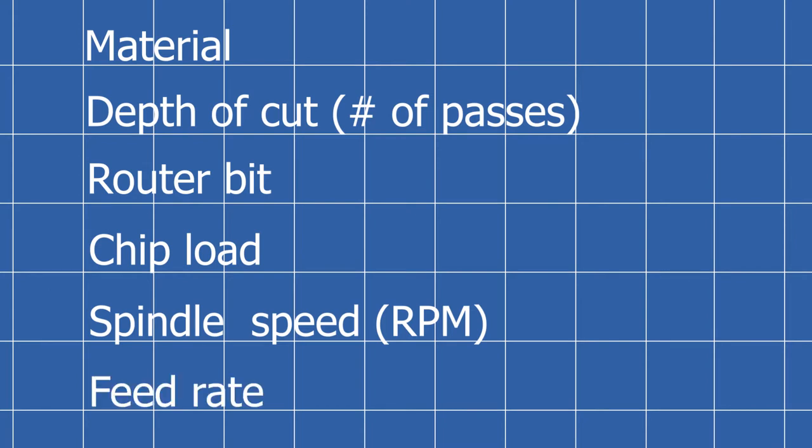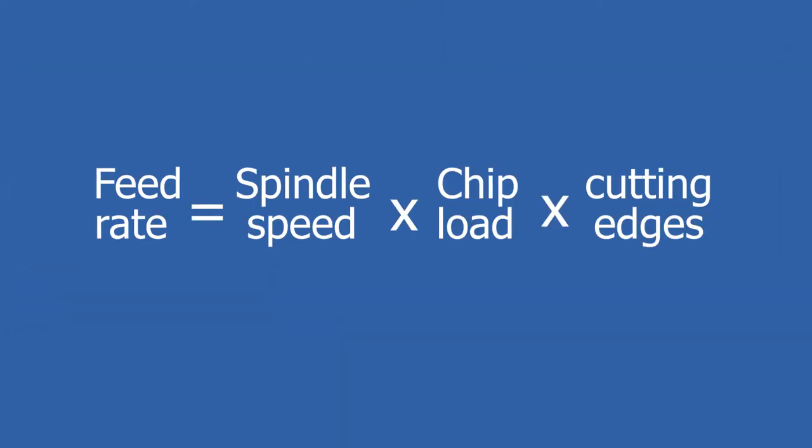The last three are related by this formula. The feed rate is determined by the spindle speed, the chip load, and the number of cutting edges of the router bit.